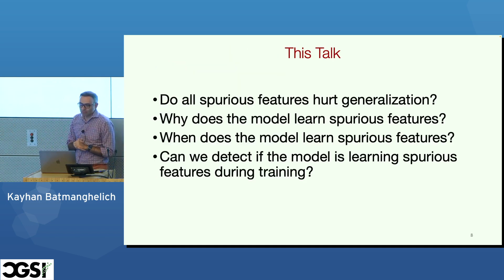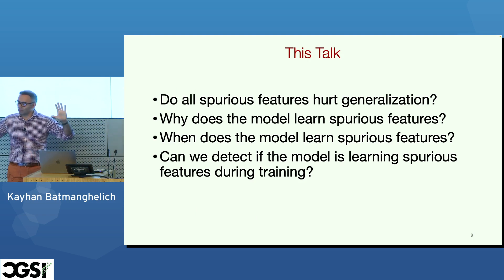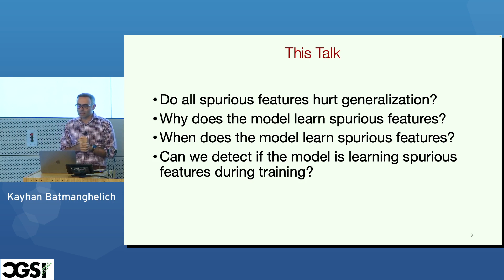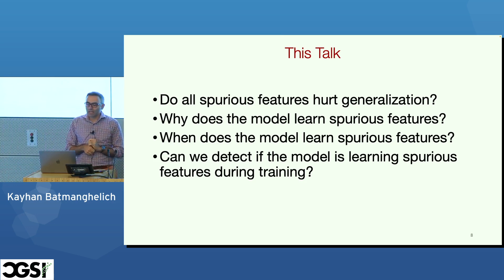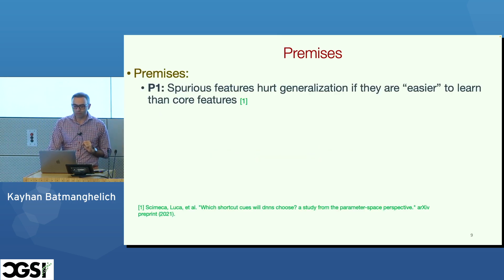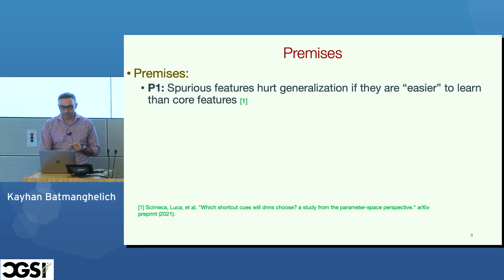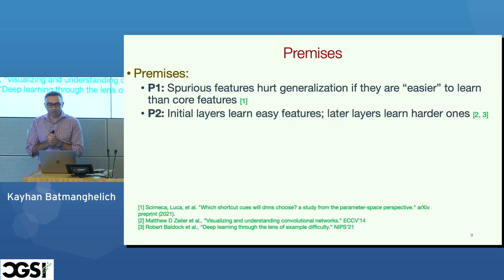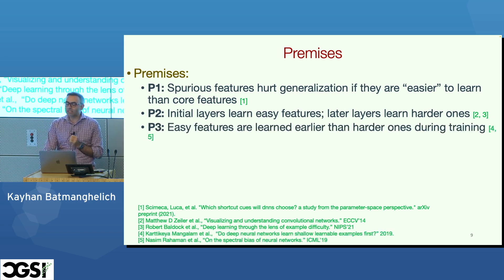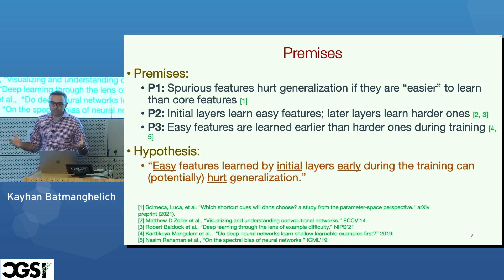This talk addresses: when and why does a model learn spurious features, and can we identify this during training? The premises are as follows: First, spurious features hurt generalization if they are easier than the main task. Second, initial layers of a neural network learn easier features earlier during training. Based on this, easy features learned by initial layers emerge earlier during the training phase.